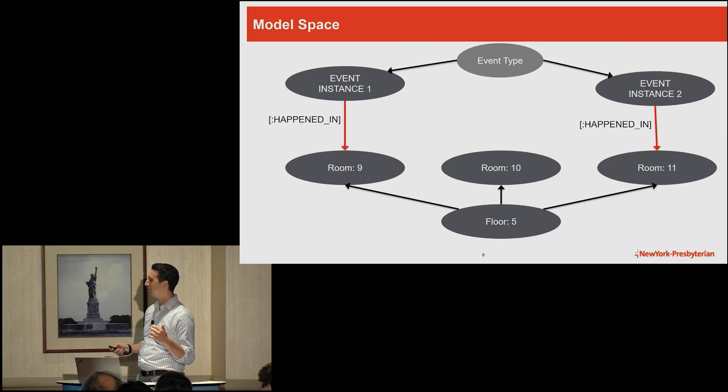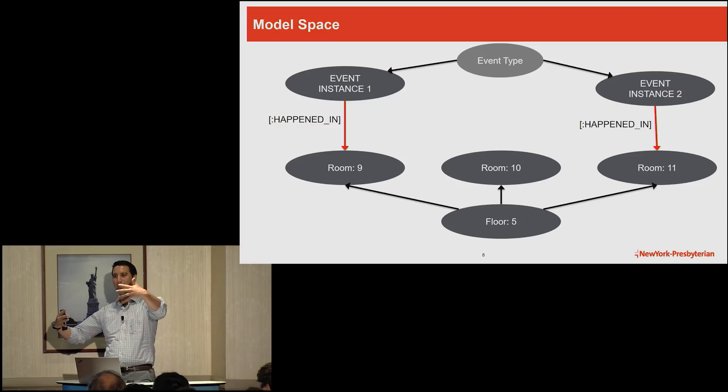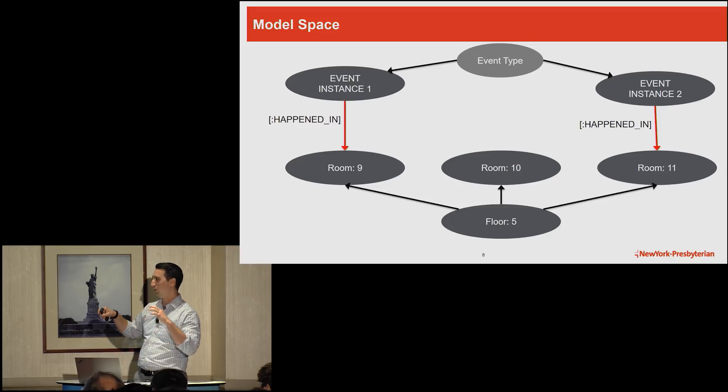Now you can take a similar tree if you think about one tree on one side and another tree on the other side, where now we have locations. So this could be a building, a unit, a floor, which breaks down to, let's say, rooms. And we could say this event, this instance of this type of event happened in the room. So let's just translate this into something that we can understand.